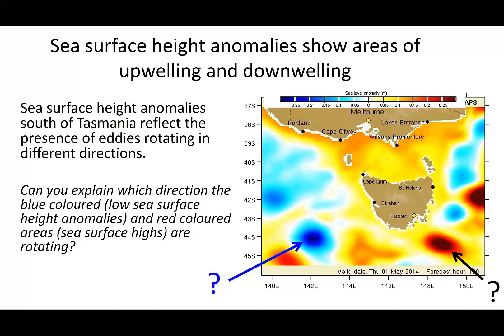Where we have convergent flow we pile up water creating a positive surface feature on the ocean, and where we have divergent flow we end up with negative features. On this map of sea surface height south of Tasmania, the red indicates a positive sea surface anomaly up to 30 centimetres higher than normal, while another bullseye area is about 30 centimetres lower than normal. The question — which you'll be answering in tutorial this week — is can you tell which way the water is rotating around these features?